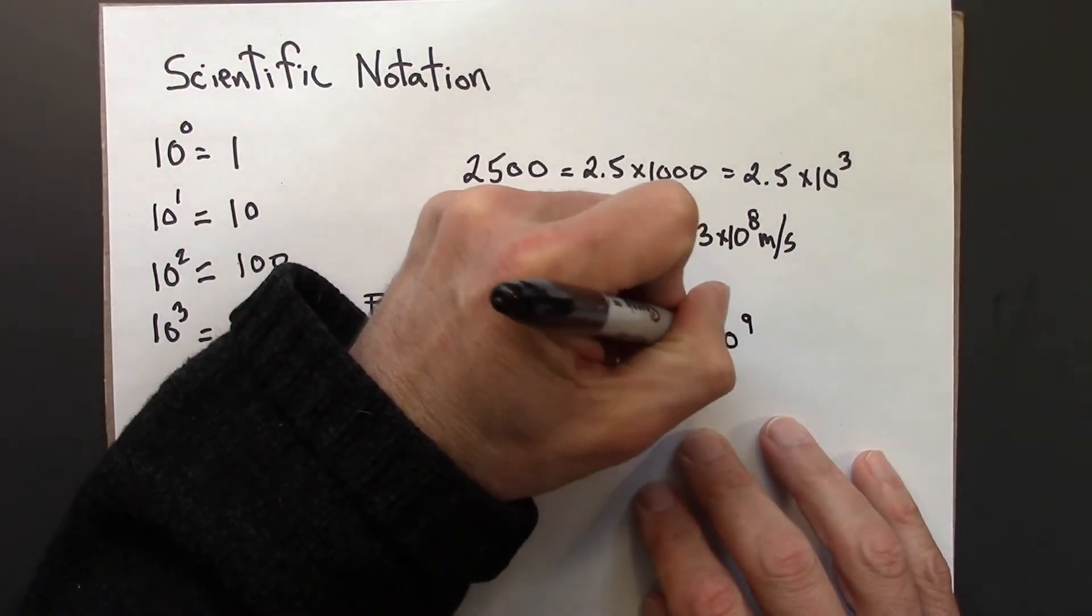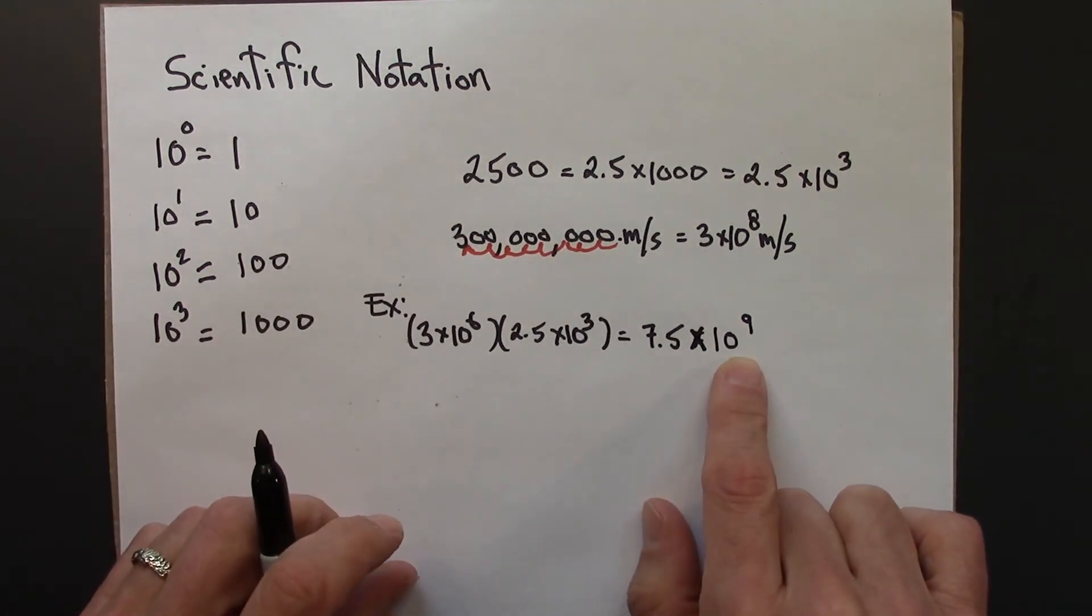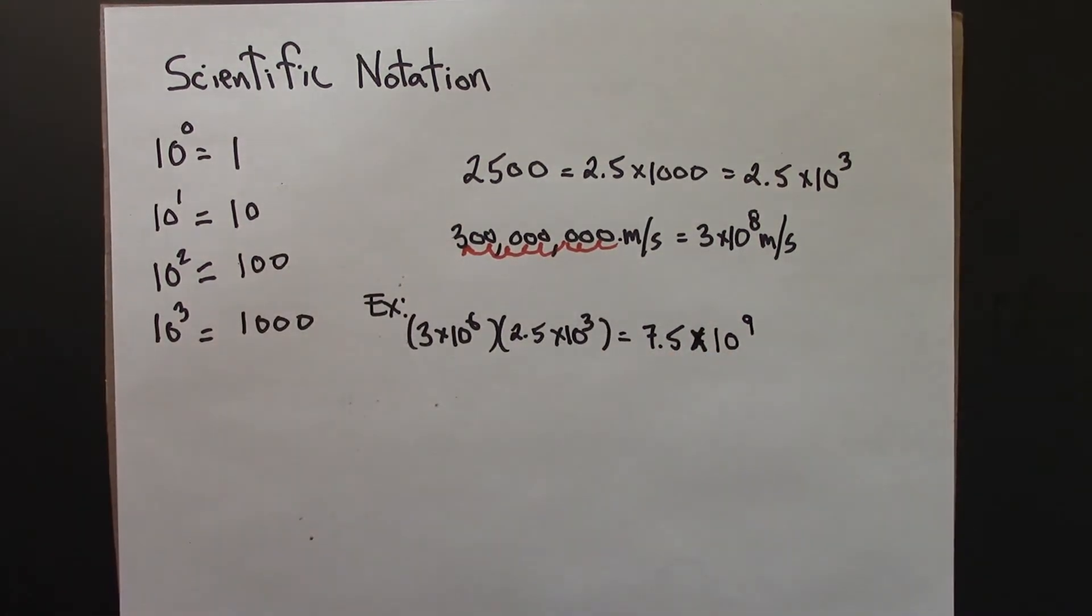That should be a times. So this is 7.5 times 10 to the 9. So that's the answer in scientific notation.